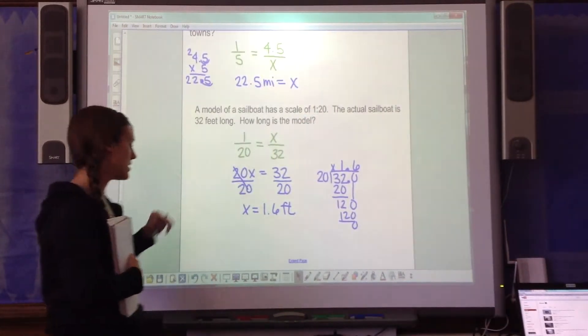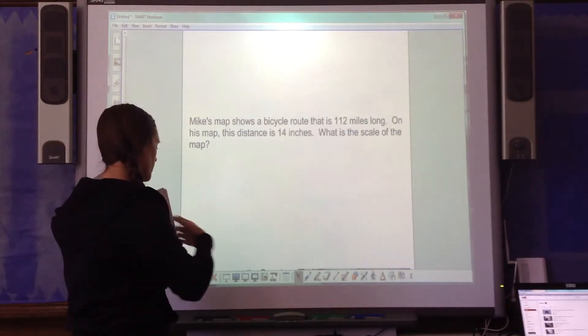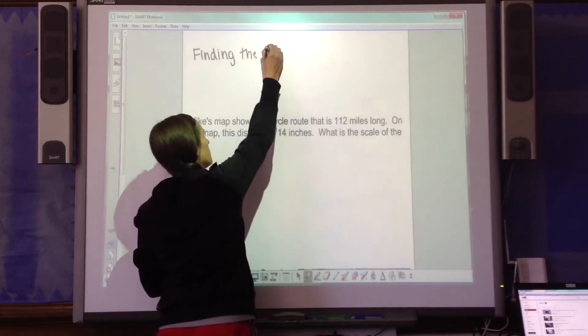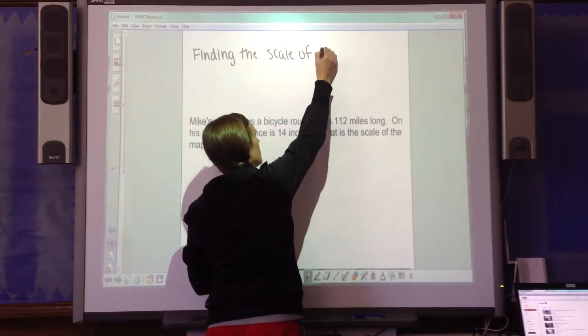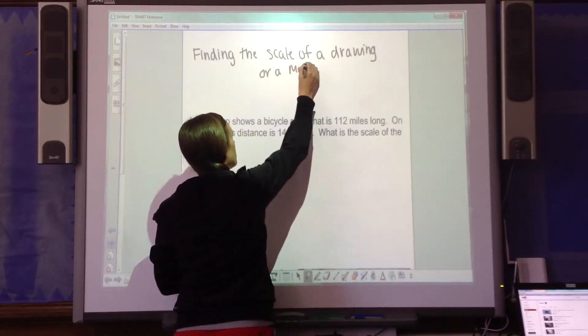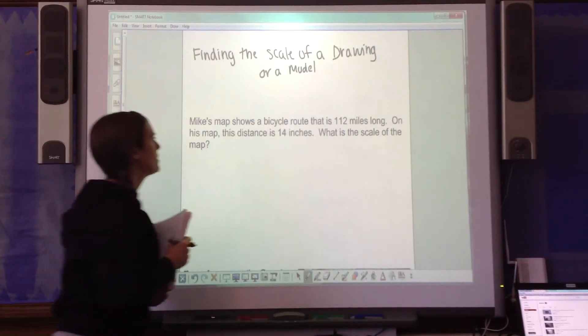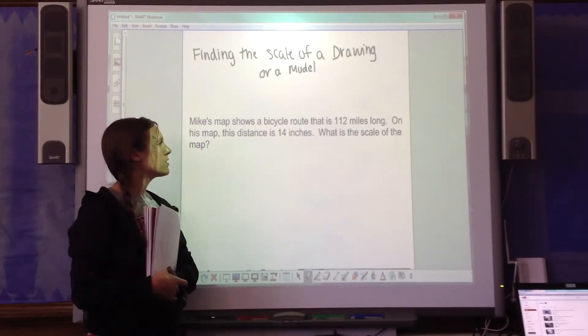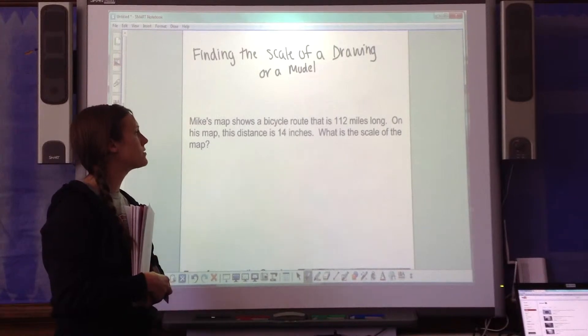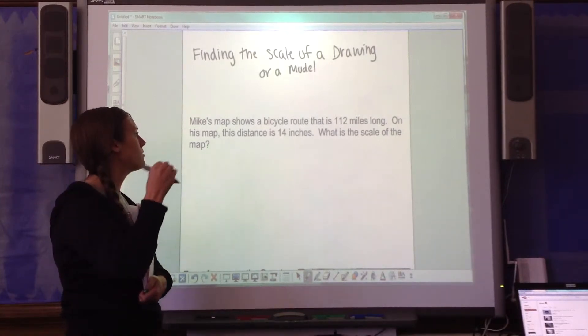So in these two examples, they gave me the scale. I had to find dimensions. Now we're going to do the opposite. This is called finding the scale of the drawing or model. We're still kind of thinking the same thing, model over the original. Mike's map shows a bicycle route that is 112 miles long. On his map, this distance is 14 inches. What is the scale of the map?